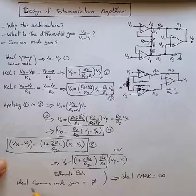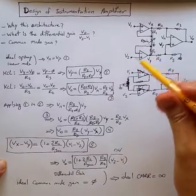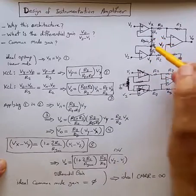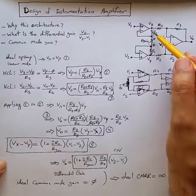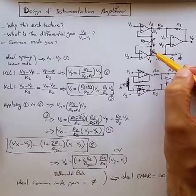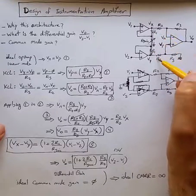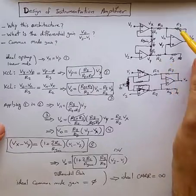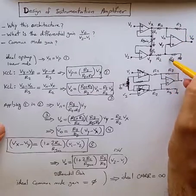For common mode gain, ideal common mode gain is zero. By ideal, we mean when we have a fully symmetric circuit where R1 on top is exactly equal to R1 on bottom and R2 on top and R2 on bottom, same, and R3 on top and bottom, same.